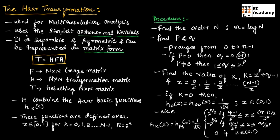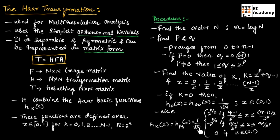If K equals 0, then H0 of Z equals (1/√n) for Z belonging to [0, 1]. If K is not equal to 0, then HK of Z equals HPQ of Z, which equals (1/√n) · 2^(P/2) if Z ranges between (Q−1)/2^P and (Q−0.5)/2^P; it equals −(1/√n) · 2^(P/2) if Z ranges between (Q−0.5)/2^P and Q/2^P; and it equals 0 otherwise for Z in [0, 1]. For all these values, 1/√n is multiplied.